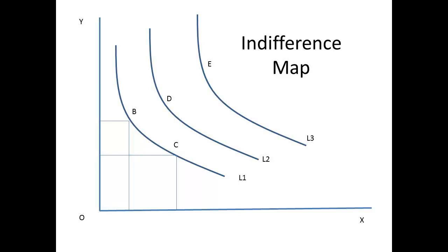Because d is on a higher curve, we can say that the consumer prefers d to either b or c as a combination, and a similar argument would then apply for e. If these curves look rather like the isoquants we met earlier, then you should be aware of one big difference. An isoquant represents a given level of output, whilst an indifference curve represents preferences. An isoquant is a cardinal measurement, but an indifference curve is an ordinal measurement.